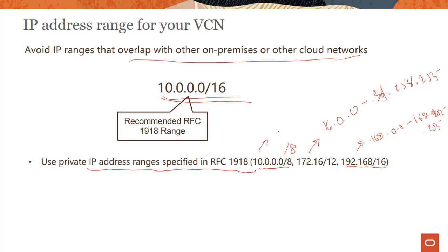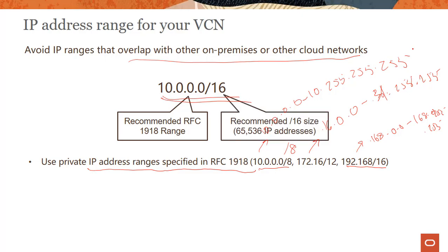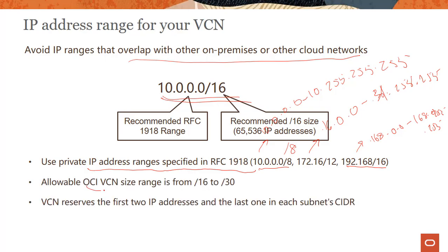The 192.168.0.0/16 range goes all the way to 192.168.255.255, and 10.0.0.0/8 goes all the way from 10.0.0.0 to 10.255.255.255. These are not addressable on the public internet — each address is unique within a private network but not outside of it. Within OCI, the VCN size we support is /16 to /30. So even though we recommend RFC 1918 ranges, we don't support a /8 range — this will come up in the exam.